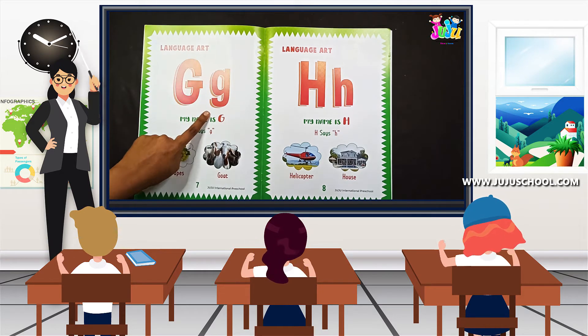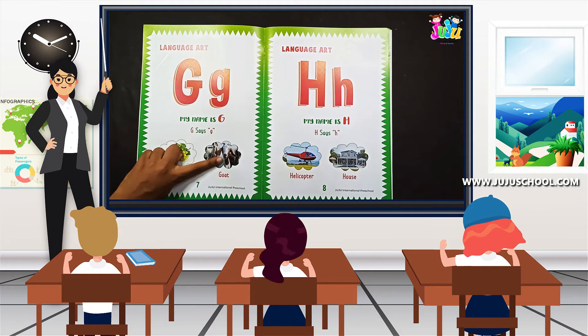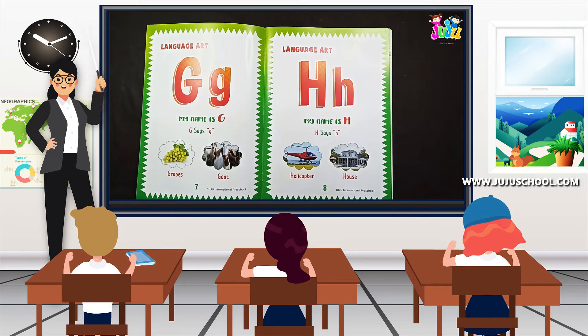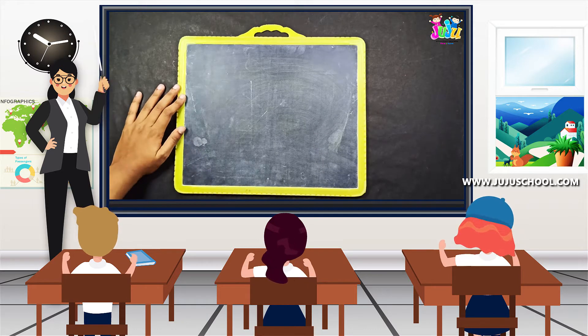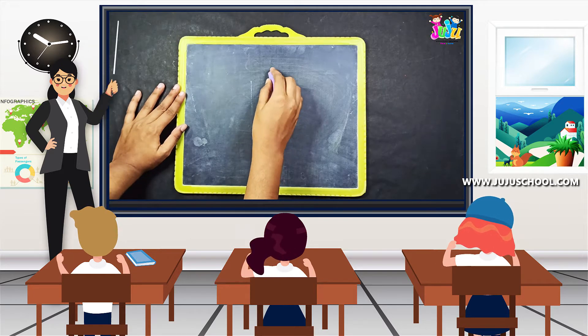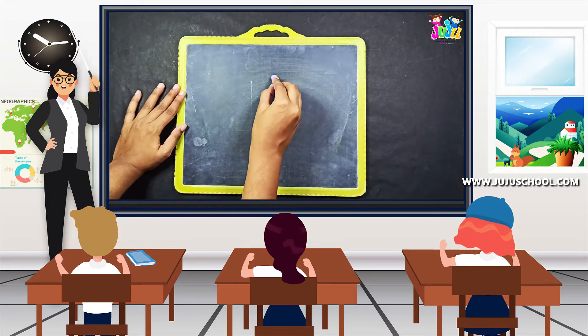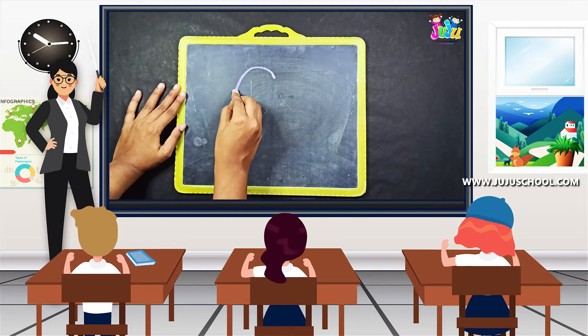So we learned letter G, and now we are going to write uppercase G. Are you kids ready? First we'll write on the slate. Draw a right curve roundabout.